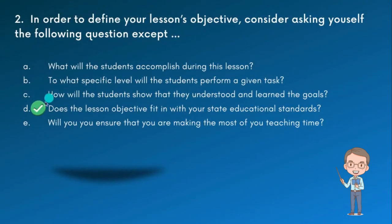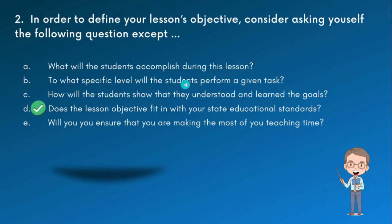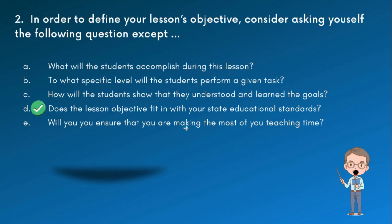Jawaban yang paling tepat karena ini 'except' adalah D: 'Does the lesson objective fit in with your state educational standards?' Ini agak kurang nyambung. Yang lain — accomplish during the lesson, what specific level (apakah tugas cocok dengan level siswa), how will the student show they understood (tolak ukur pemahaman), dan berkaitan dengan waktu — semua lebih relevan dengan mendefinisikan tujuan pembelajaran.